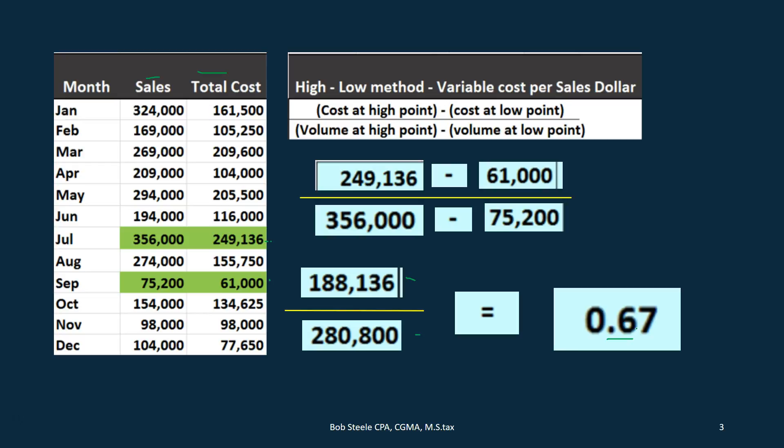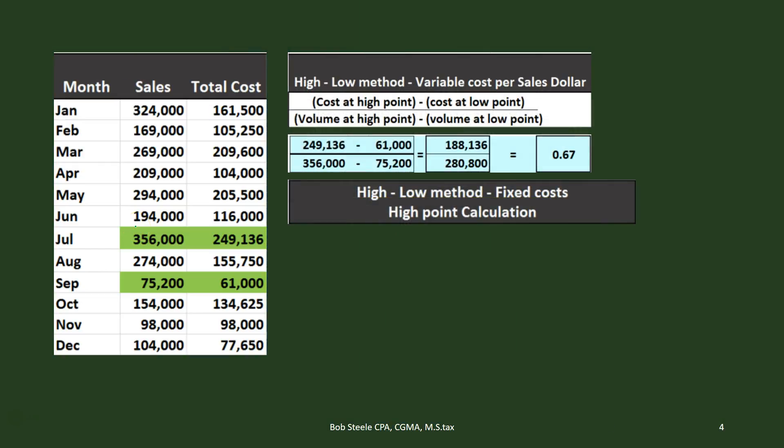So $0.67 per sales dollar will be the variable portion. Once we figure that out, we can subtract the variable portion from the total to get the fixed portion. We'll do that calculation for both the high point and the low point, and we would expect to come out to the same fixed cost at both points — since the fixed portion should be fixed regardless of volume.